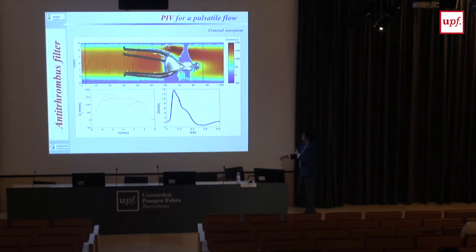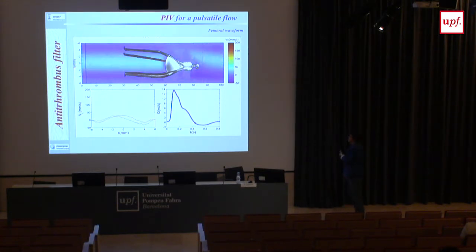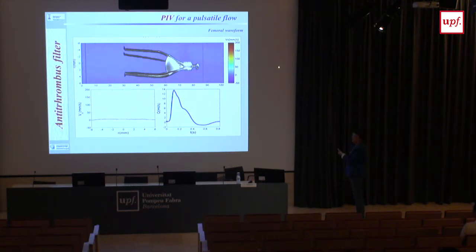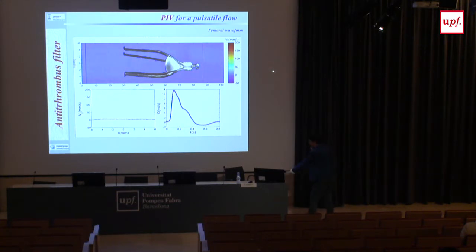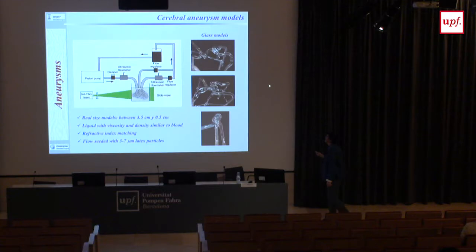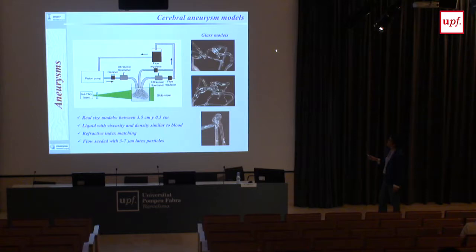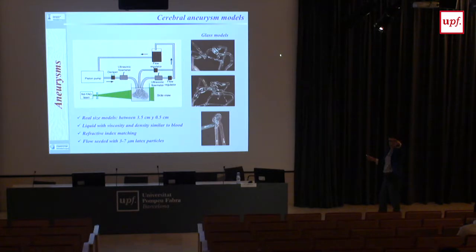This was the flow visualization result — you can see the flow with the filter. Now moving to the next application: aneurysms. I will tell you first what we did with PIV and then I will explain what you see.